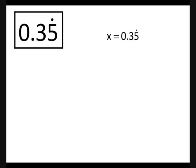Next, we're going to look at 0.35 recurring, where it's just the 5 that's recurring. If we start off with x equals 0.35 recurring, times it by 10, we get 10x equals 3.5 recurring. And looking at these two terms, they have different decimals — one has a 3, one doesn't. Times by 10 again, 100x equals 35.5 recurring.